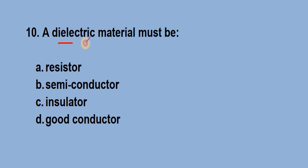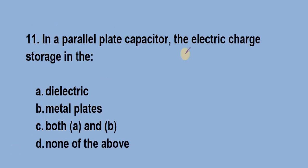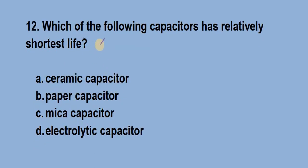Question number 10: A dielectric material must be? Answer is option C, insulator. Question number 11: In a parallel plate capacitor, where is the electric charge storage in? Answer is option A, dielectric. Question number 12: Which of the following capacitors has relatively shortest life? Answer is option D, electrolytic capacitor.